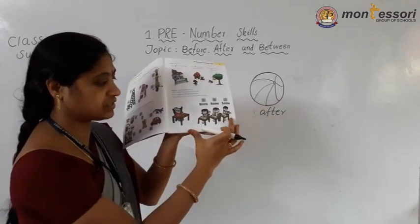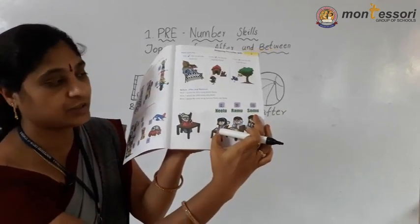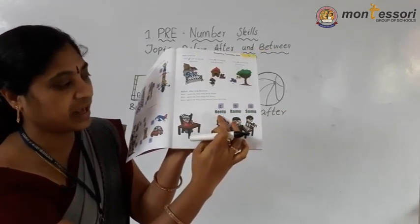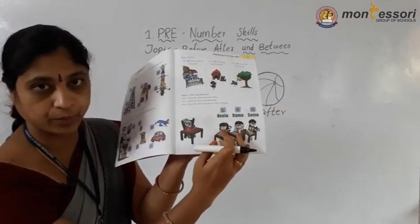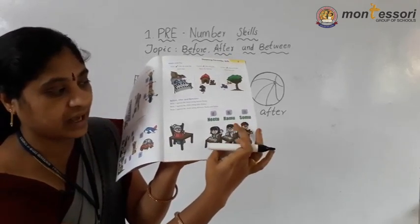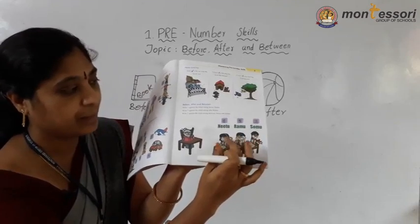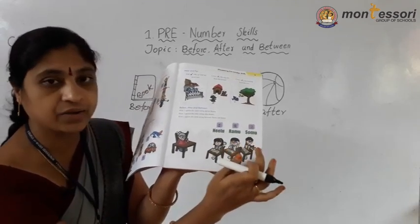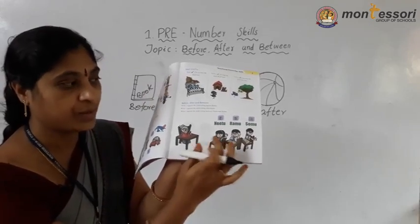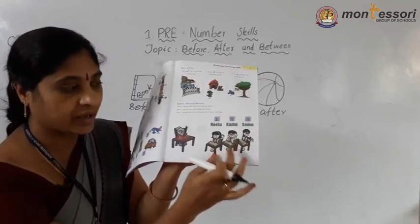Here three children are sitting — one is Neetu, one is Ramu, and one is Somu. Neetu is sitting before Ramu. Somu is sitting after Ramu. So Neetu's place is before, Somu's place is after, and Ramu's place is between.